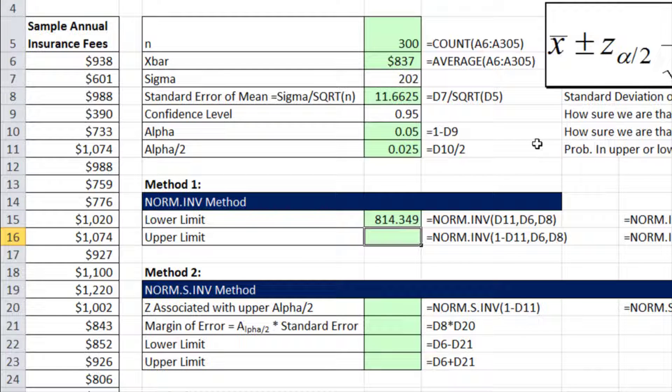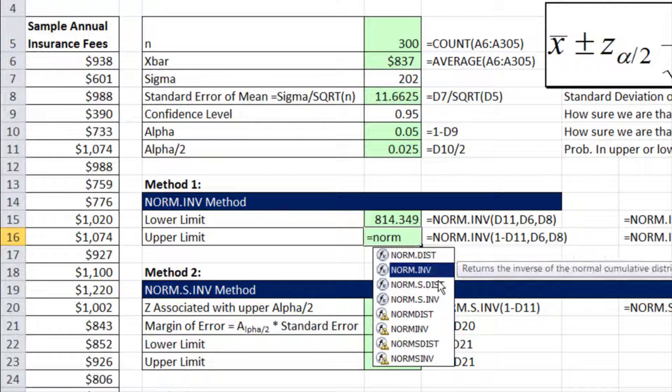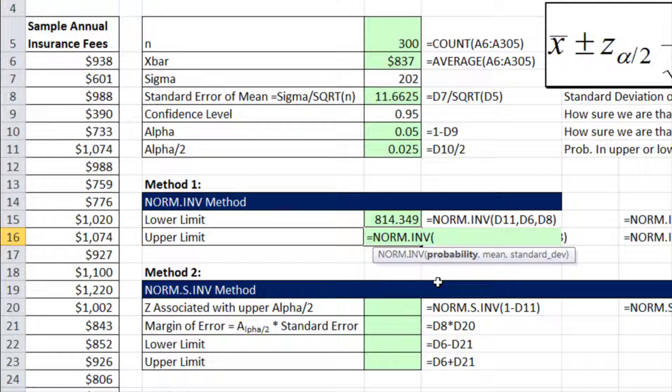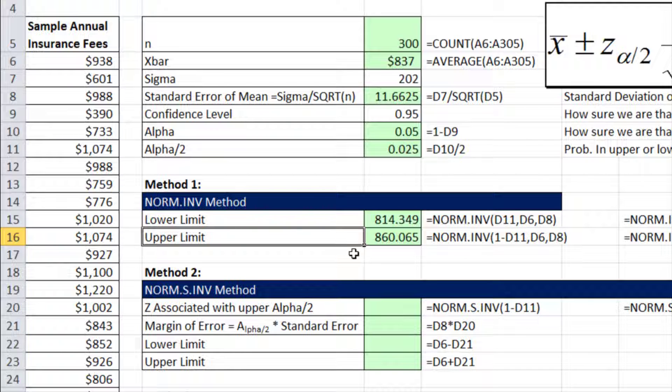So our lower value for our confidence interval would be approximately $814. Our upper NORM.INV, we give it our probability. Since we need all the probability from negative infinity up to the last little 0.025, we do 1 minus. And then we have our mean and our standard error. So directly, using NORM.INV, we can calculate the lower and upper limits. Between these two limits, we're 95% sure that our population mean occurs.